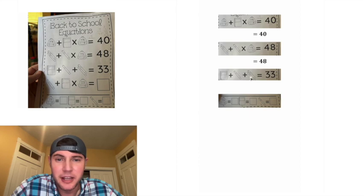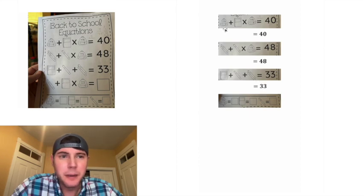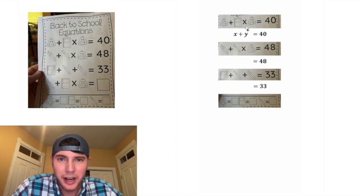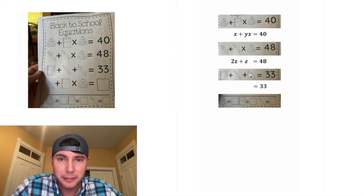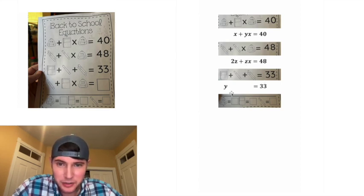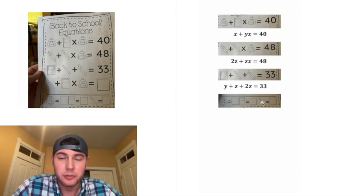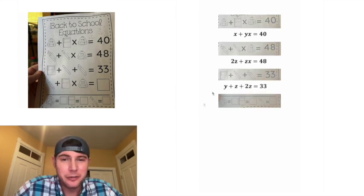These backpacks are x, so we bring down the plus, the notepad is y, and then we multiply that by another backpack which is x. For the next equation: two markers is 2z, plus one marker z times a backpack x. For the last equation: the notepad is y, plus a marker z, plus two markers 2z. Now we have our three equations.